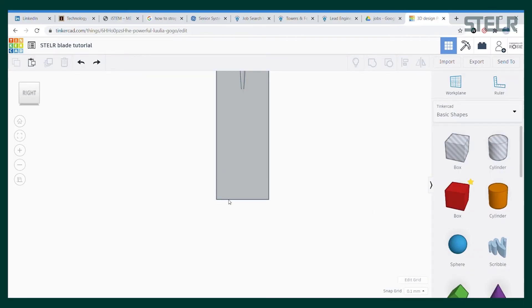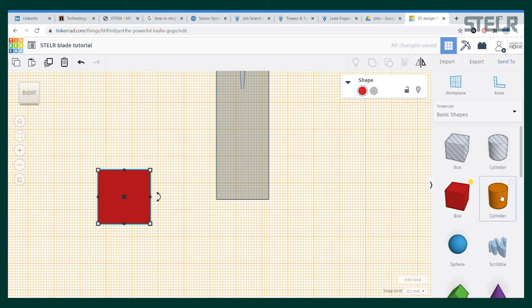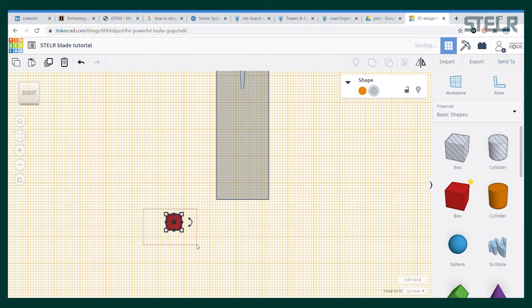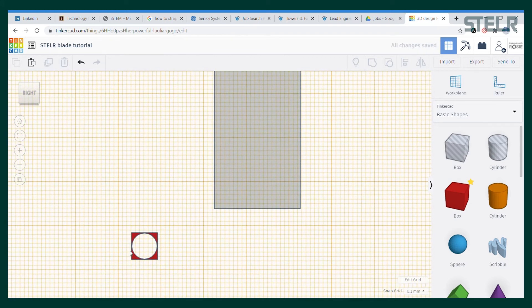So first take a block then a cylinder. The rounded edge has a three millimeter radius so we need to make the diameter of the circle double that: six millimeters by six millimeters. Then the block should be a square shape also with six millimeter sides. We'll align the centers of these two parts and then make the cylinder a hole and group them so the cylinder cuts the block.